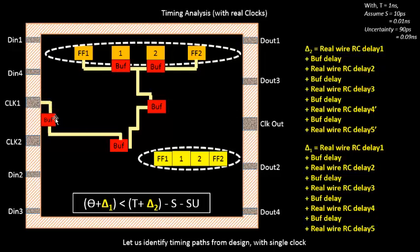Similarly for delta 2, it is the real wire RC delay plus the buffer delay and so on until flip-flop 2. In the combinational delay path you have the clock-to-Q delay of flip-flop 1, the estimated wire delay, the delay of logic 1, an estimated wire delay between logic 1 and 2, the real delay of logic 2, the estimated wire delay of logic 2, and flip-flop 2. So the combinational delay still consists of estimated parasitics, while clock network delays delta 1 and delta 2 use real parasitic delay. Since the clock tree is never touched in the further optimization stage, it makes sense to do timing analysis at the clock tree synthesis stage.